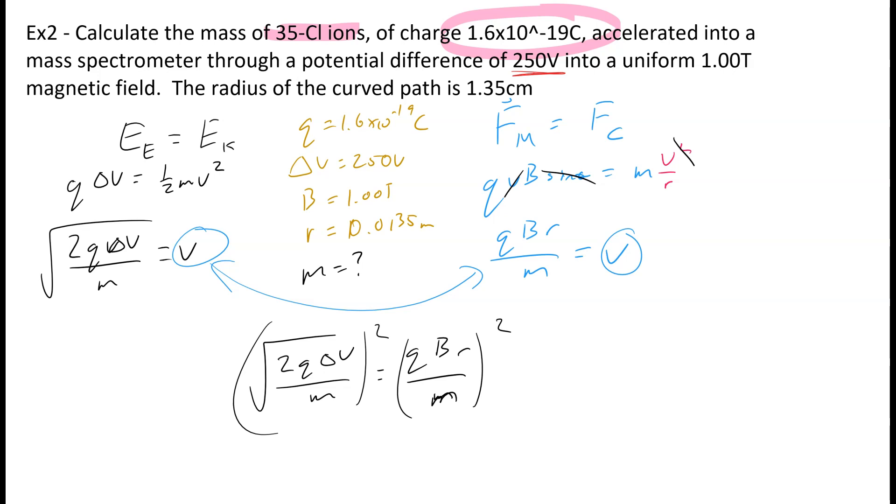So this will leave us with 2Q delta V over m is equal to Q squared B squared R squared over m squared. Also really complicated to read, so let's do some simplifications. We've got an m there, we've got an m squared right here. We've got a Q here, we've got a Q squared right here.